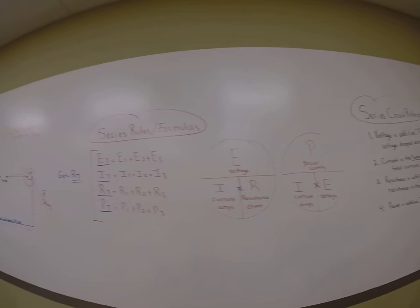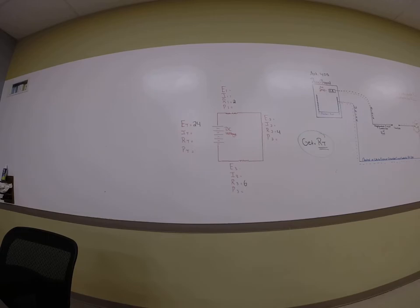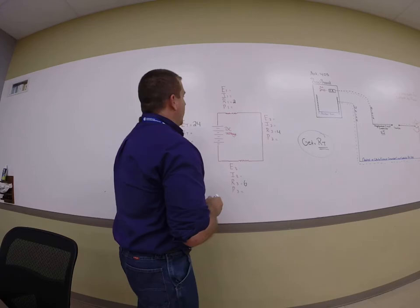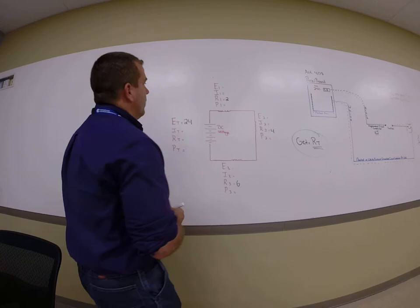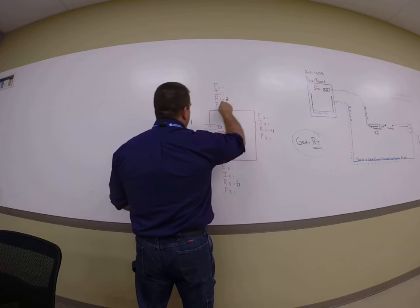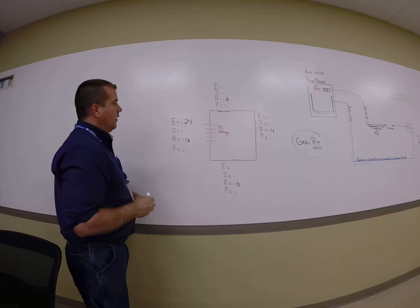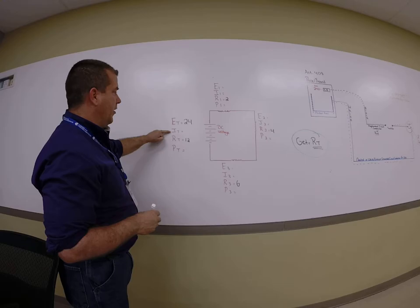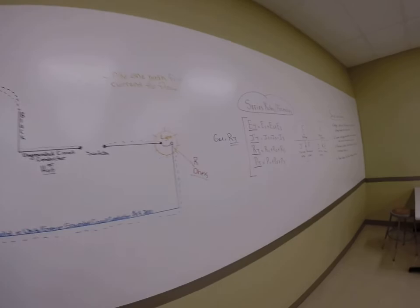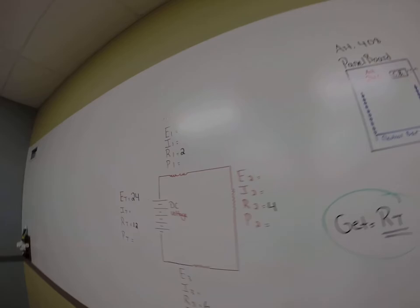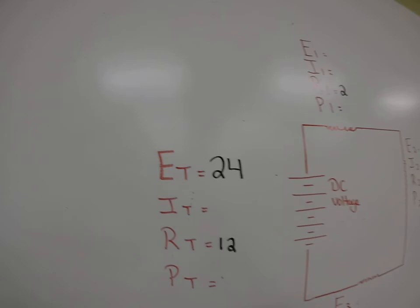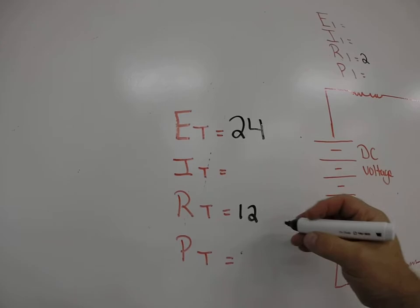Cover up the quantity that you're looking for and do the math equation that's left. Let's do some simple numbers. The rule of a series circuit is that we need to get to total resistance — get RT. Resistance is additive in the circuit, so if I took 6 plus 4 plus 2, my total resistance would then become 12. Now I want to find current. If I already have voltage and resistance and I'm trying to find amperage, I cover up amperage — it's going to be E divided by R. So E divided by R: 24 divided by 12 equals 2.